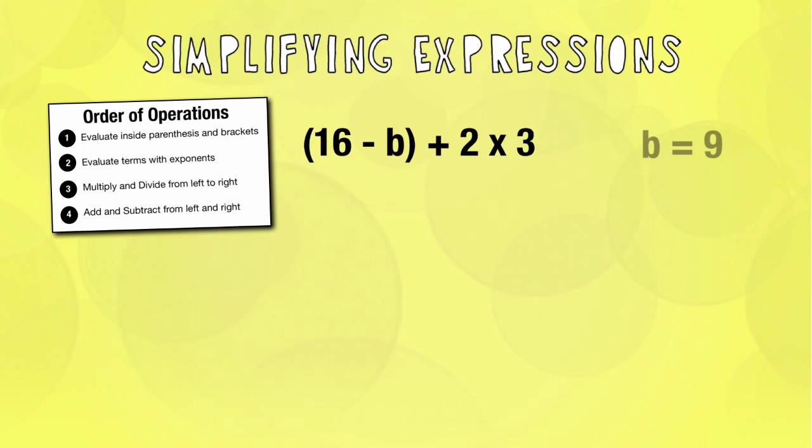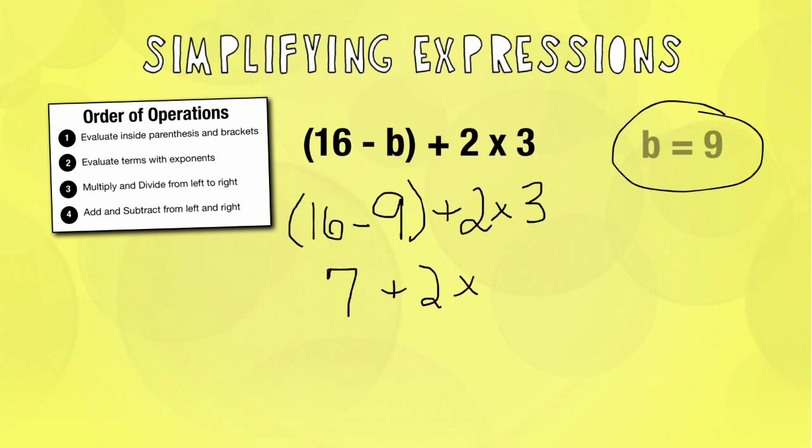The quantity of 16 minus b plus 2 times 3 when b equals 9. So again, I'm going to rewrite the problem, but now I'm going to put 9 in there. Okay, I do the parenthesis first. 16 minus 9 is 7 plus 2 times 3.